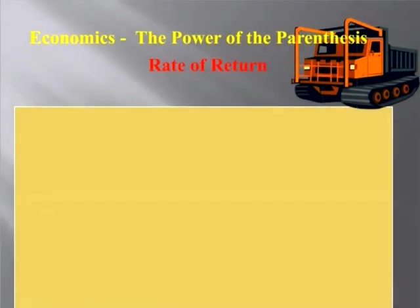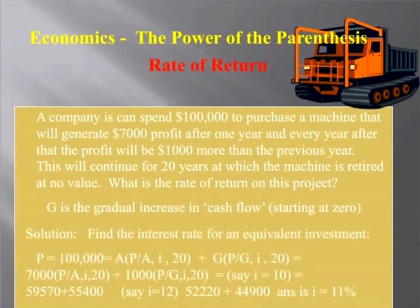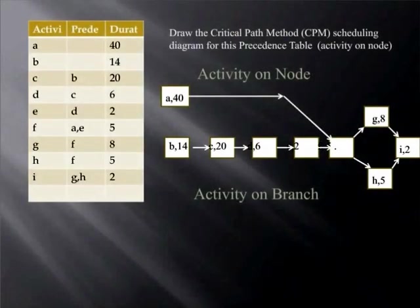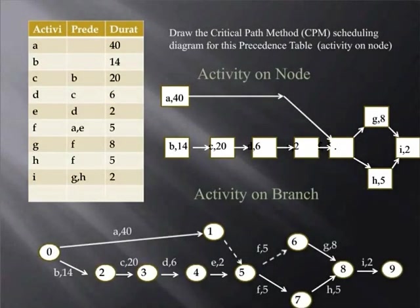For example, in the construction section, we'll be talking about economics, and I'll show you easy ways to solve economics problems using the interest tables that are available in your reference handbook. Also, in the construction session, we'll be talking about scheduling, about types of critical path methods, activity on node, and activity on branch.